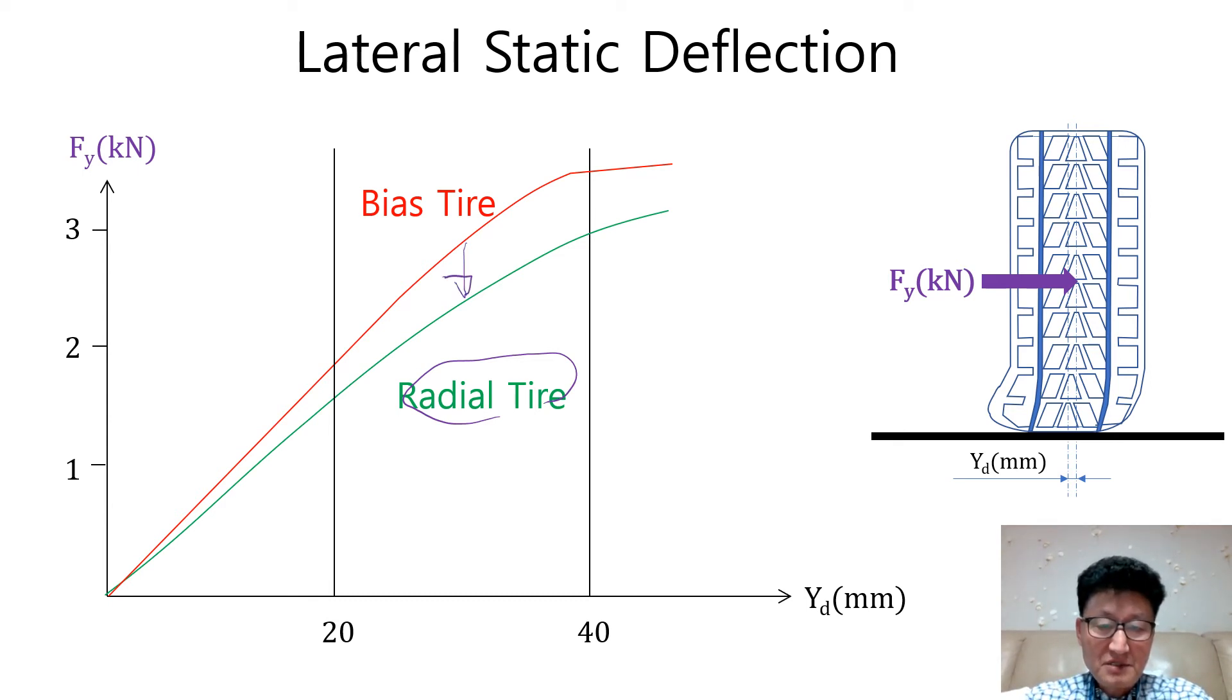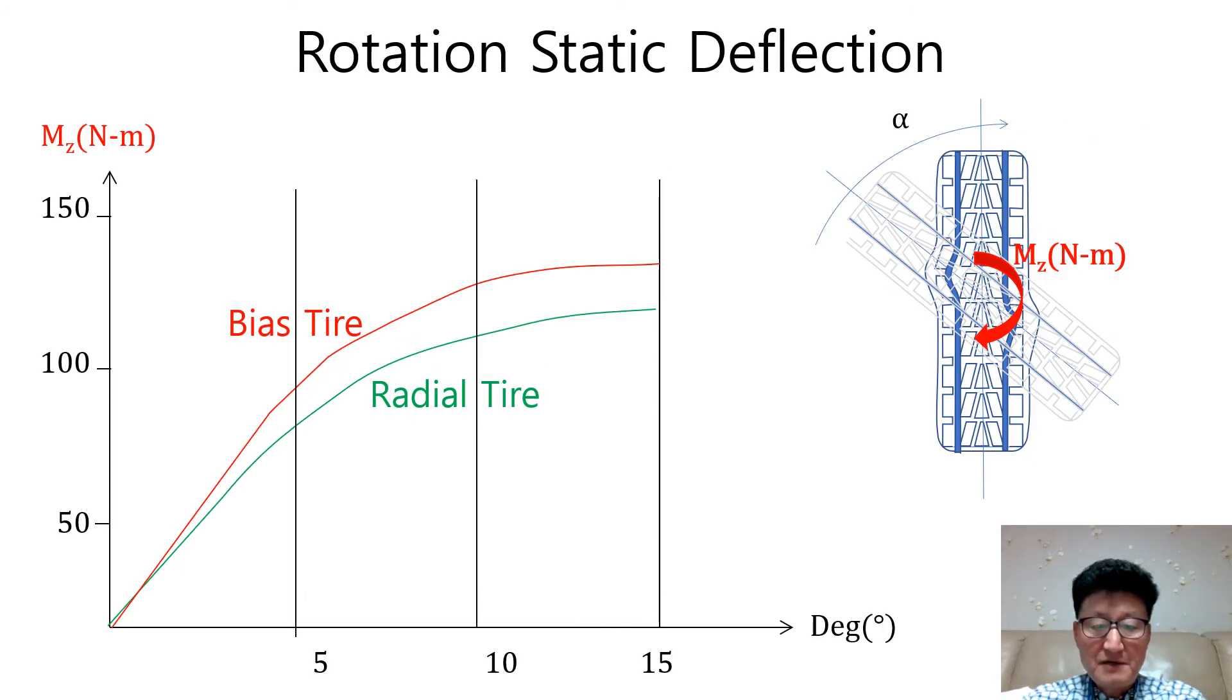This graph shows the moment deflection curve when the moment about Z axis is acting on the tire in the steering motion. The same thing happens as in lateral loading. Radial tire is also softer than bias tire circumferentially because of lower stiffness of structure between tread and bead wire.